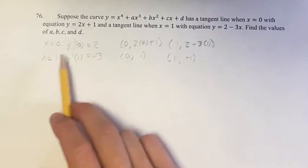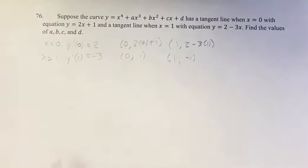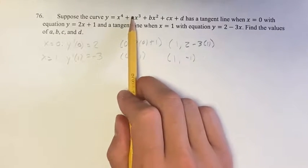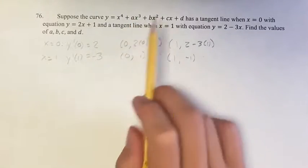So we know these four pieces of information, and this is going to give us four equations to solve for our four variables: a, b, c, and d.